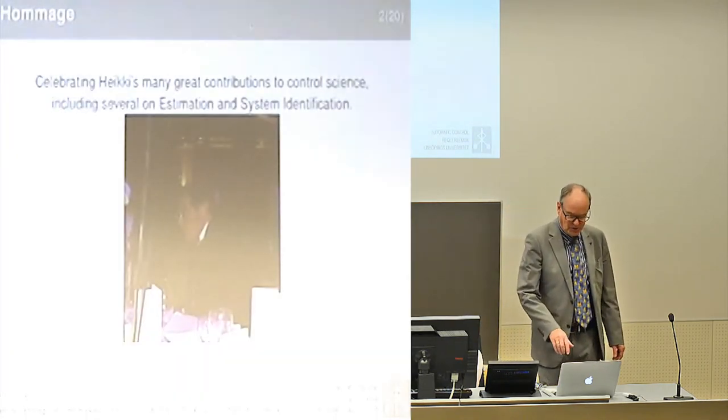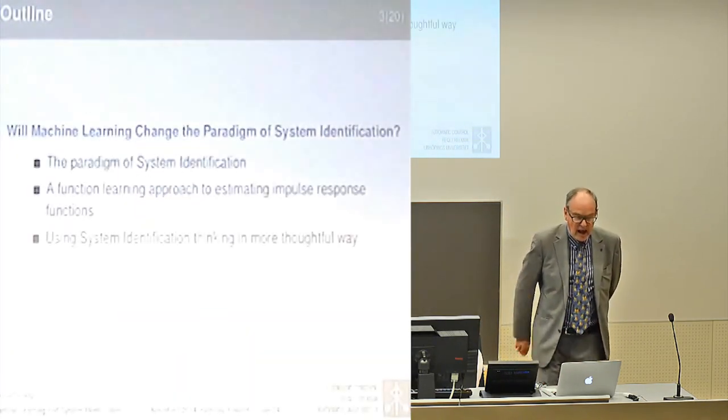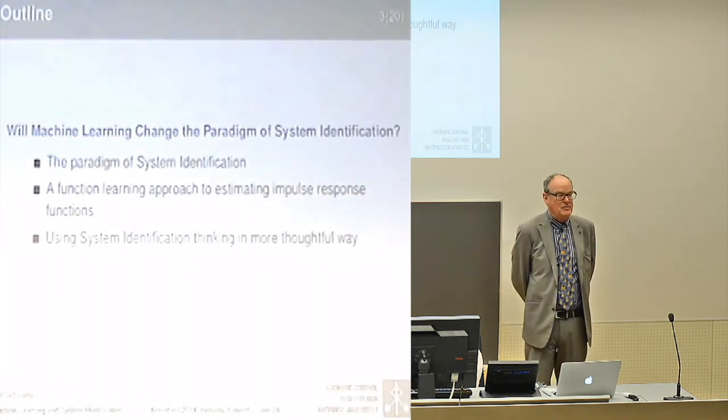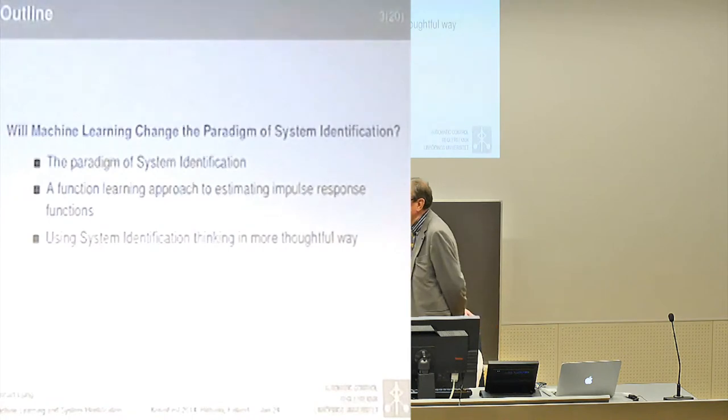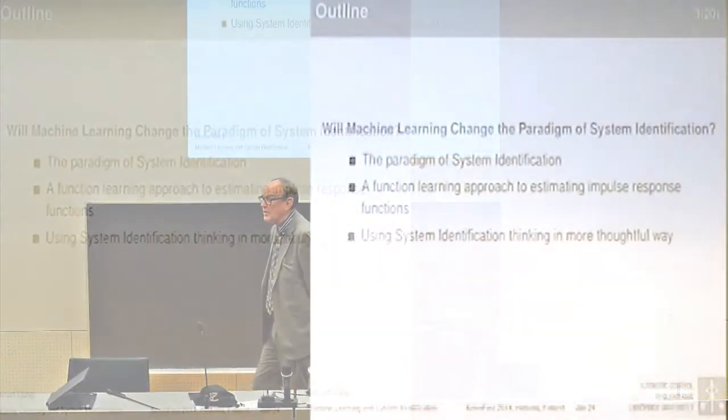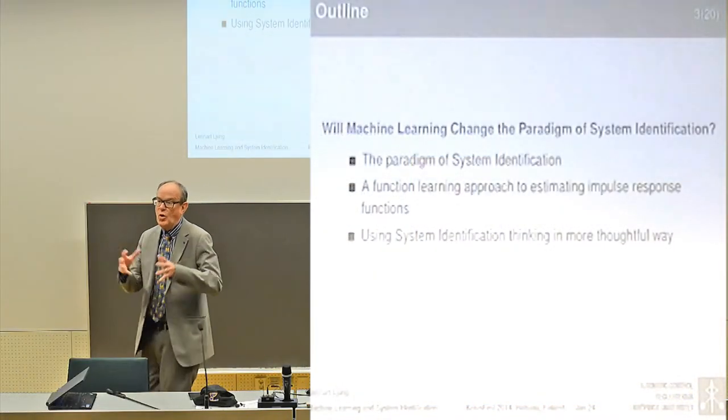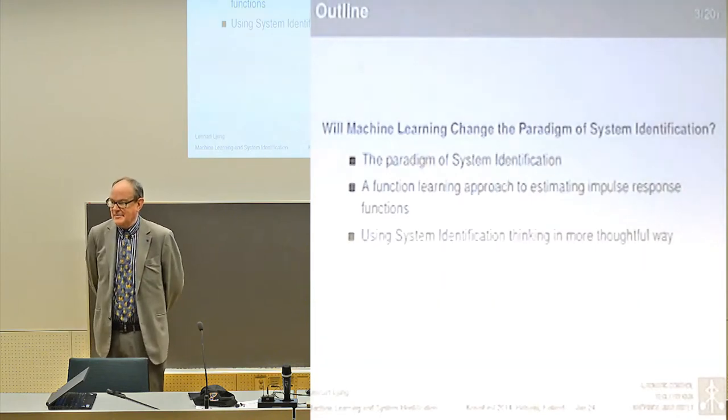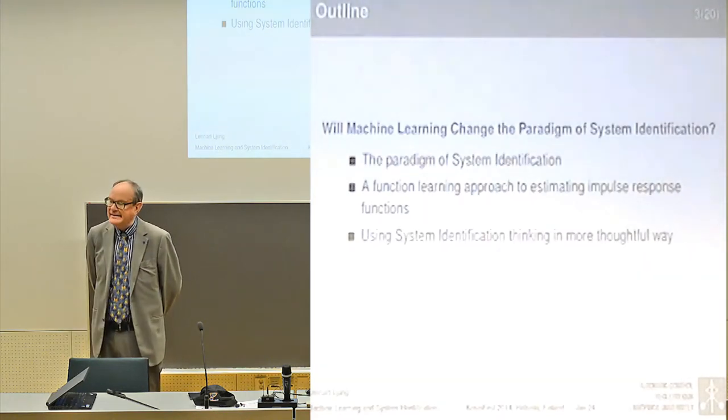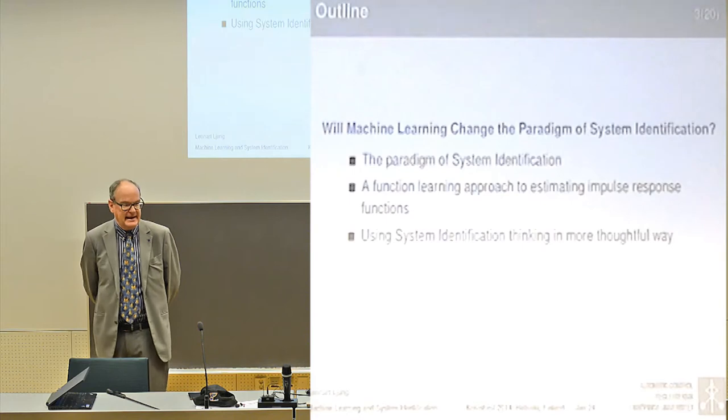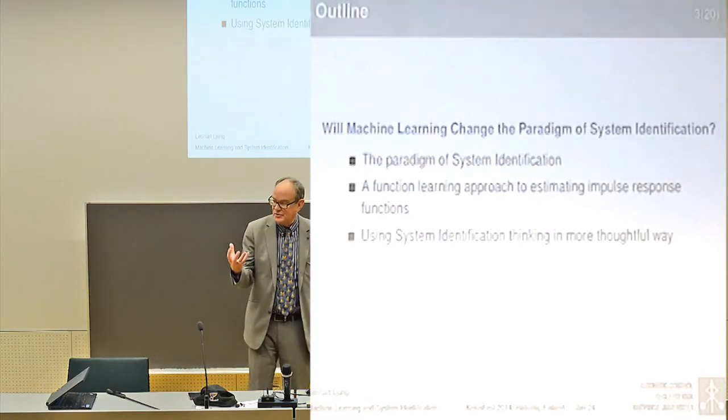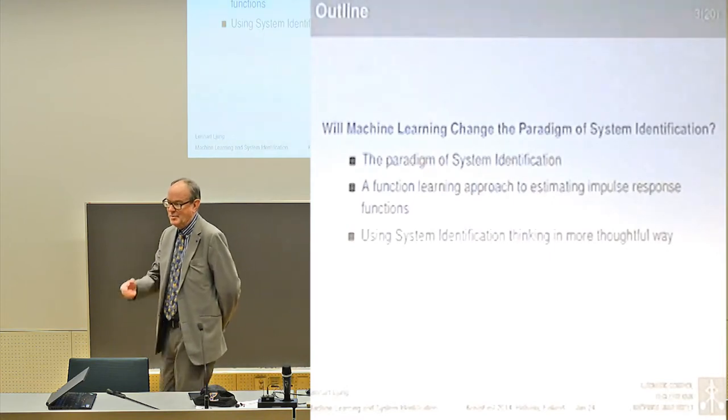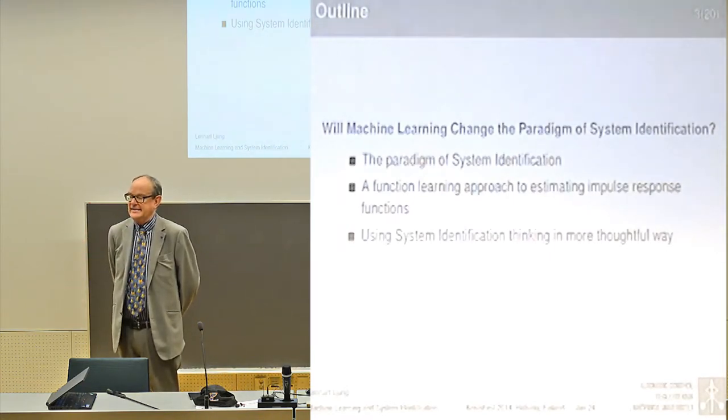So the title of my talk is when machine learning changes the paradigm of system identification. It's an ill-defined title actually, because I have not defined what is machine learning. It's very vague and loose. I will come to that later. But anyway, I will give you a simple example, a very concrete example of how to estimate impulse responses, and take two different views on that problem.